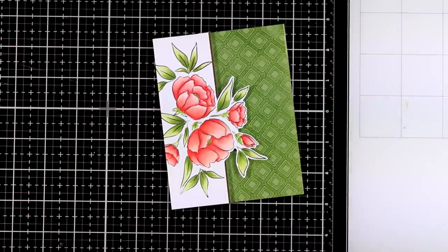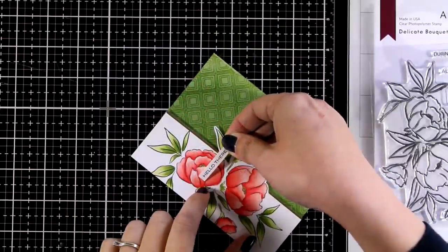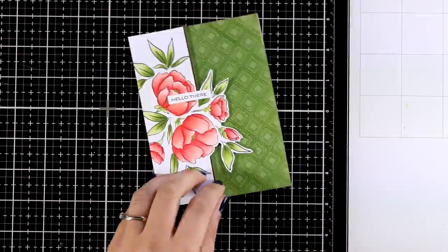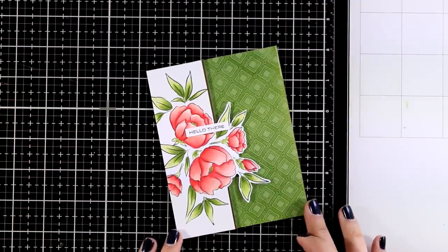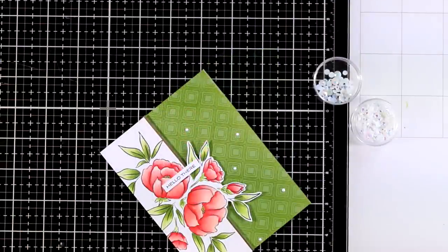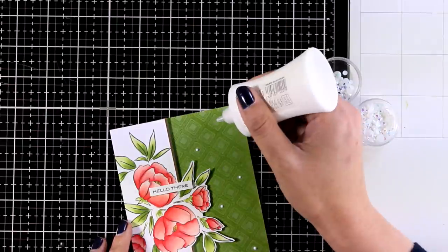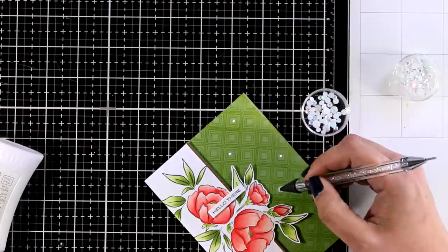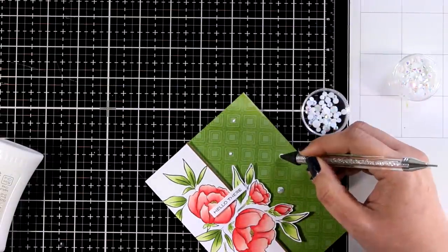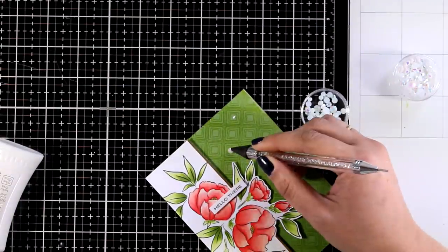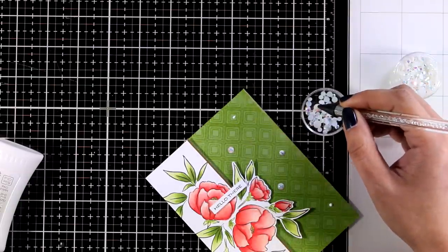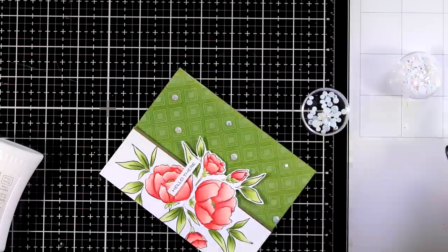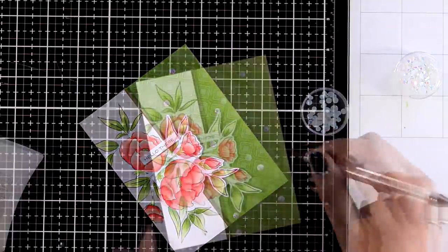Just like I always say, a flower card is perfect for any occasion, so it's up to you whatever you want to add on top as a sentiment. I decided to go with 'Hello There' which I stamped with black ink on a thin strip of white cardstock. Finally, I'm going to embellish the green part of my card with a few gems in a white color. I'm picking up my gems with my embellishment wand by Studio Katia, which I find really, really handy.